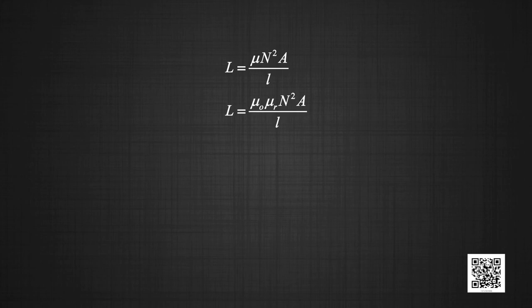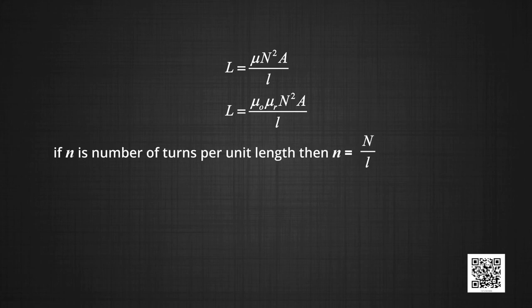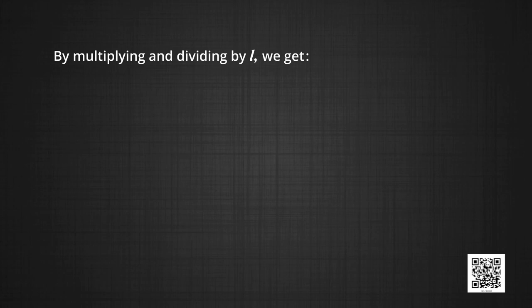L becomes equal to mu naught mu R N squared A by L. If small n is the number of turns per unit length, so small n becomes equal to capital N by L. Multiplying and dividing by L, we get L is equal to mu naught mu R n squared A into L, where small n is capital N by L.